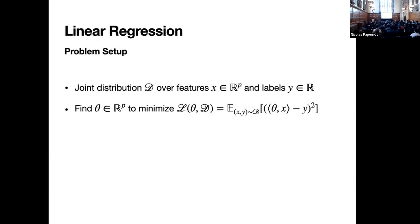The problem setup is very straightforward and easy to understand. We're trying to solve a linear regression problem. Given the joint distribution D over features X in high dimension P and labels Y in one dimension, we're trying to find the parameter vector theta in dimension P to minimize the empirical loss on the data distribution. And we're going to do this with differential privacy.